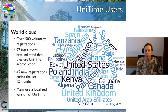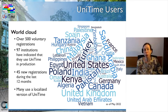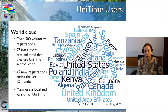We have users basically all around the world. You can see a word cloud consisting of countries from which we got registrations. We got a total of over 500 voluntary registrations — voluntary meaning that we don't require registration, so we might not know about all the users who have downloaded UniTime and use it. From the registrations we also know that 97 institutions indicated that they use UniTime in production. During the past year we've had 45 new registrations, so the project is alive and new institutions have been downloading and starting to use it.